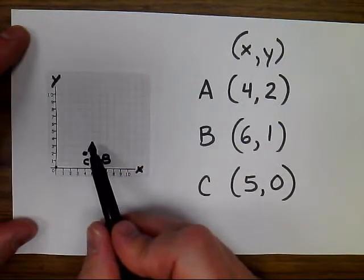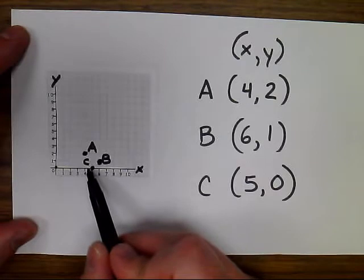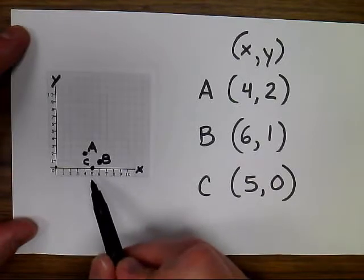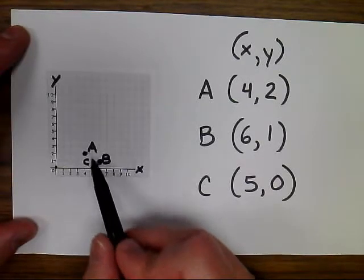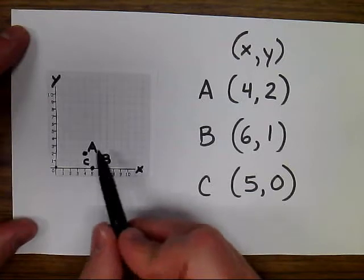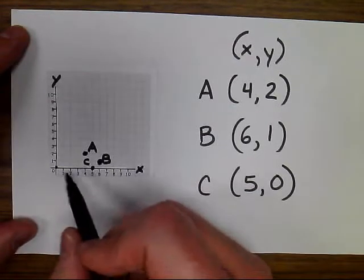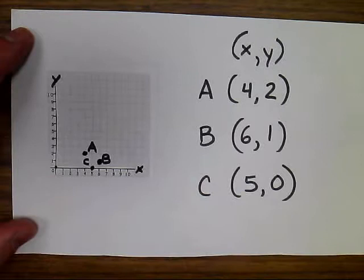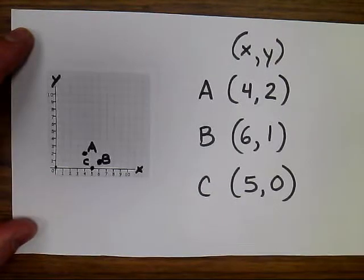You can see in the first two I made my letter off to the right. Here I made it off to the left. There's no real rule, just making sure you know which point goes with which. In this case, I might want to make those letters a little closer to the points.